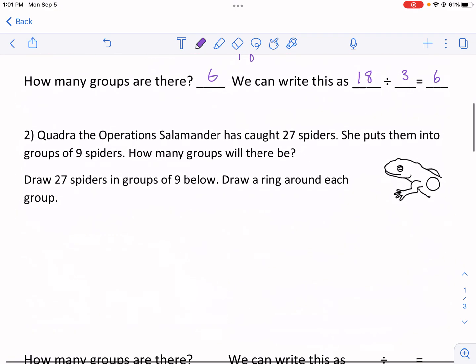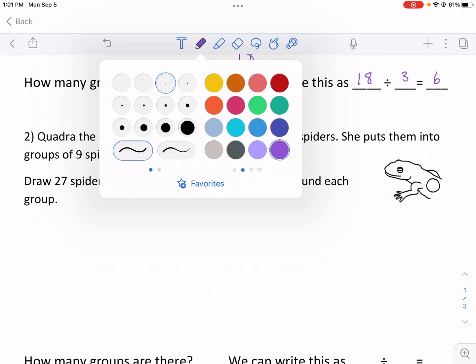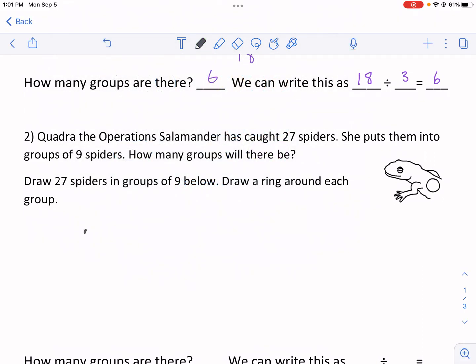Quadra, the operation salamander, has caught 27 spiders. She puts them into groups of nine spiders. How many groups will there be? Let's see what kind of spider I can get drawn here. Very similar process. I'm going to draw my spider first.